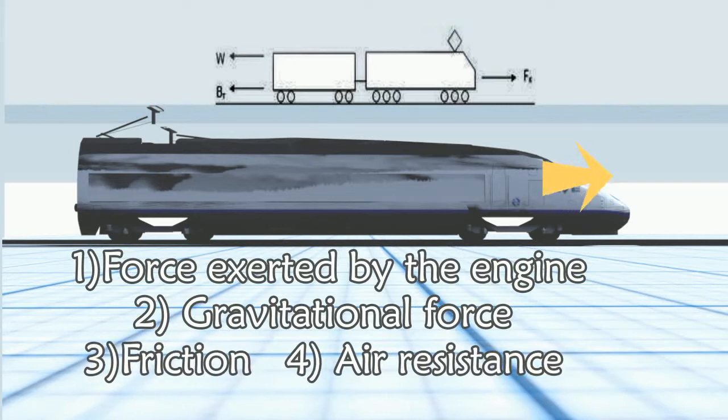The pulling force is controlled by the driver of the train and favors the direction of motion, whilst air resistance and friction oppose the direction of motion.